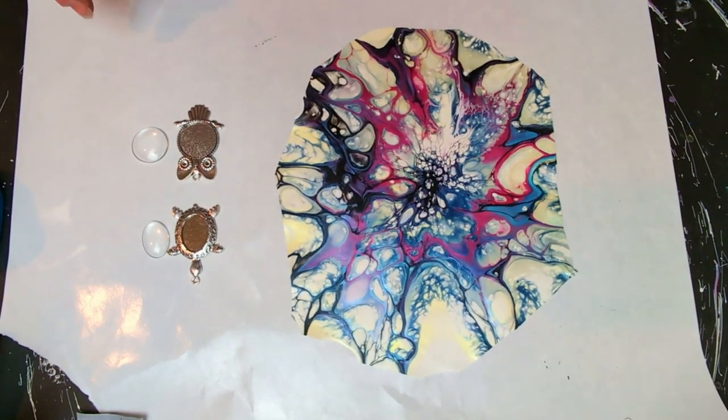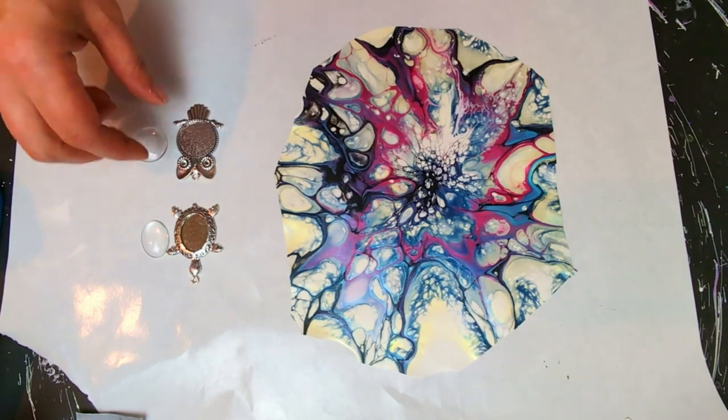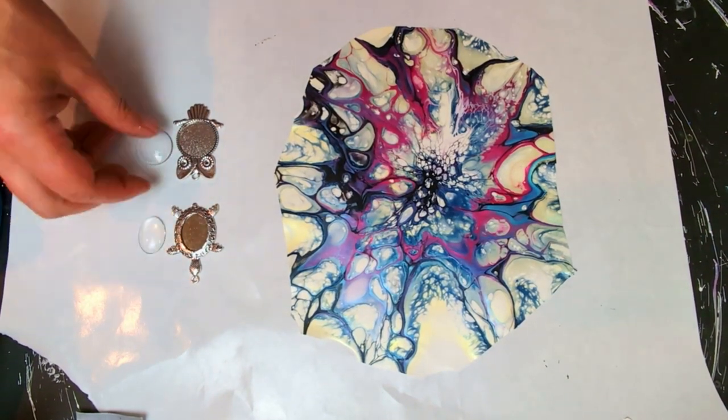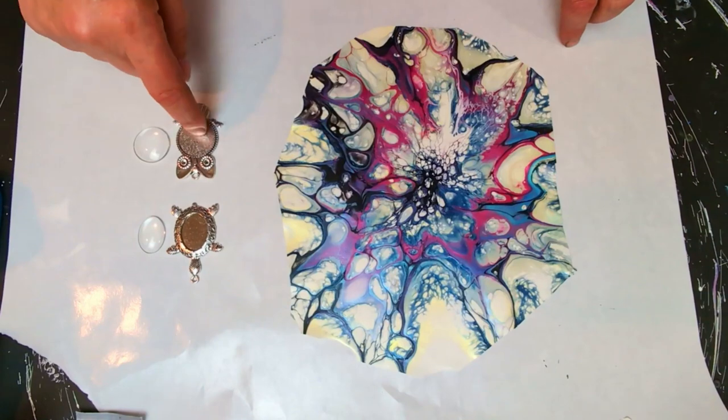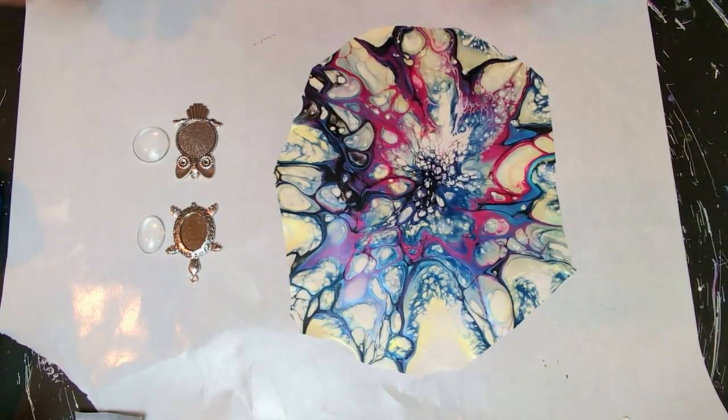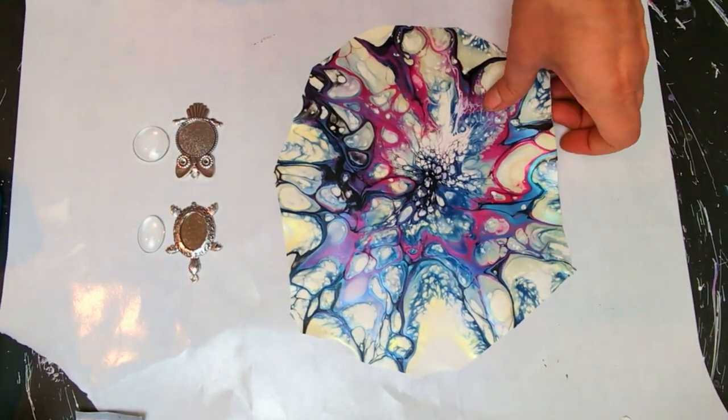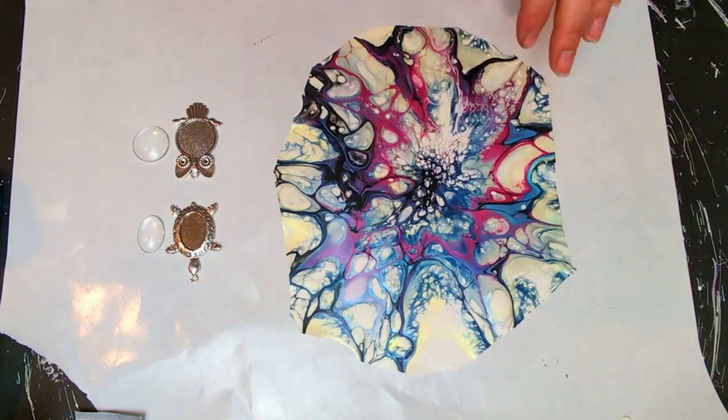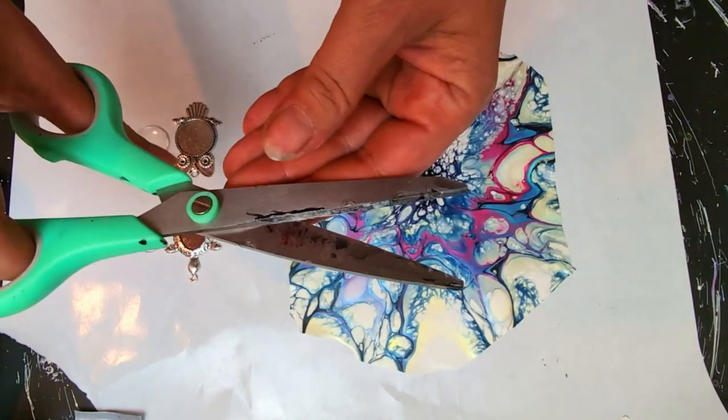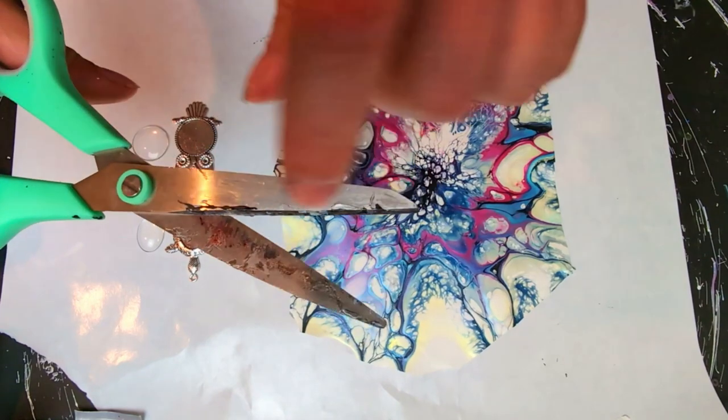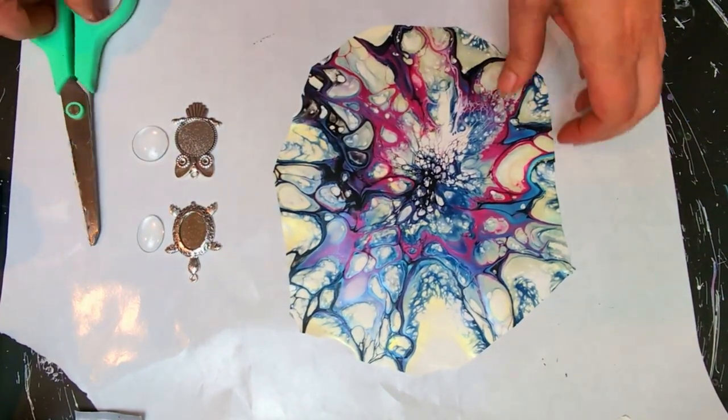So I will be starting out with the 25-millimeter owl and turtle, because I have the punches for those. And we'll need some scissors. As you can see, I've been using these a lot. They've got glue on them and stuff.